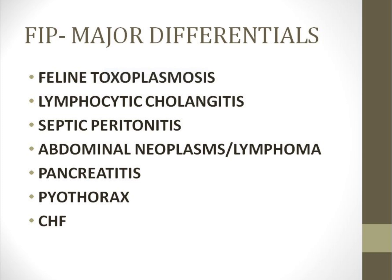Another differential is abdominal neoplasms such as lymphoma. Considering the age of the animal, these neoplasms usually occur in cats older than 10 years, whereas FIP is mostly a disease of young cats. To definitively confirm the disease, cytology would be required.